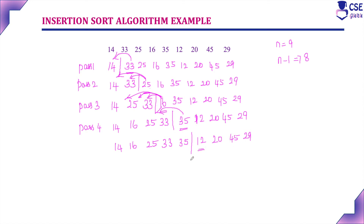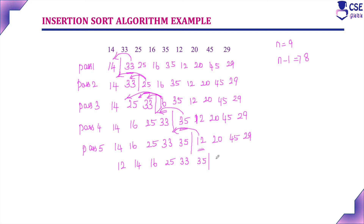Now consider element 12 — that will be compared with all elements in the sorted list in pass 5. 12 is the smallest element compared to 14, so 12 will occupy the first position. The remaining sorted elements follow: 14, 16, 25, 33, and 35. The remaining unsorted elements are now 20, 45, and 29.